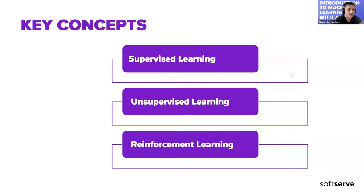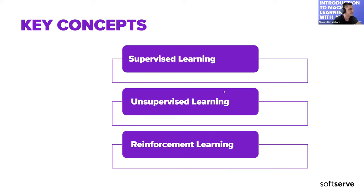There are three general types of machine learning: supervised learning, unsupervised learning, and reinforcement learning. Let's look at each of these types in detail.